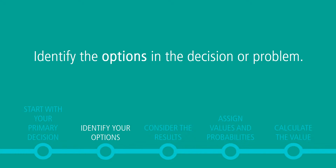Next, identify the options in the decision or problem. Draw a line for each option from the objective box on the right. Keep the lines far apart and leave yourself room to include labels and add your thoughts. Label each line with a short description of the option.